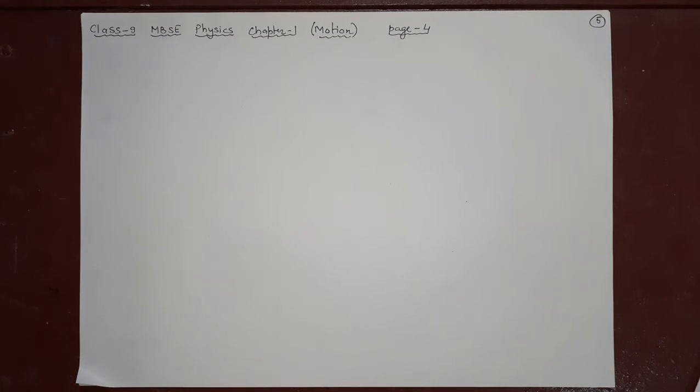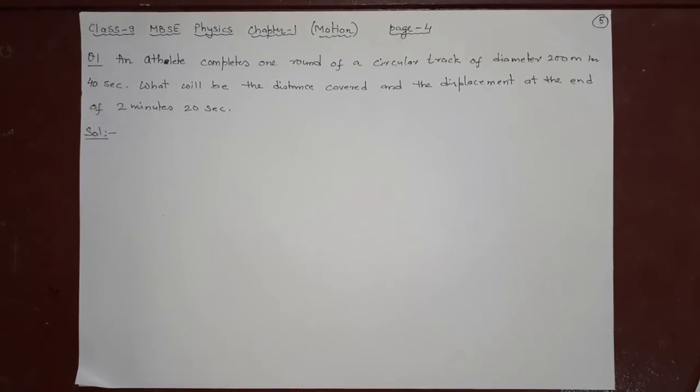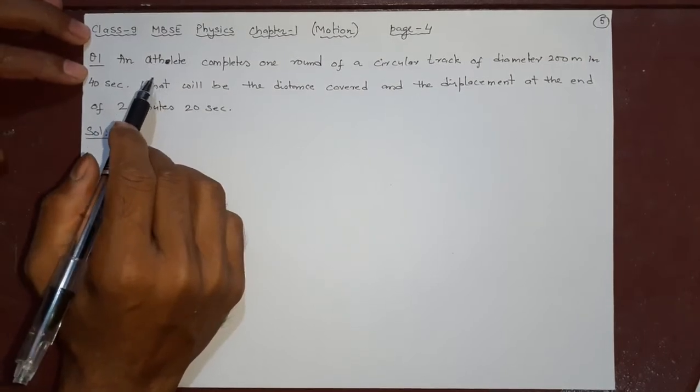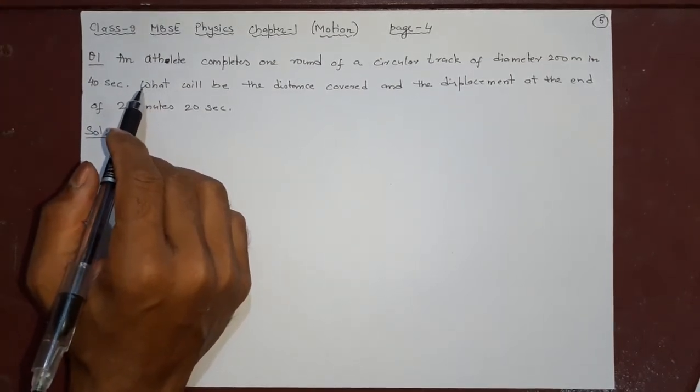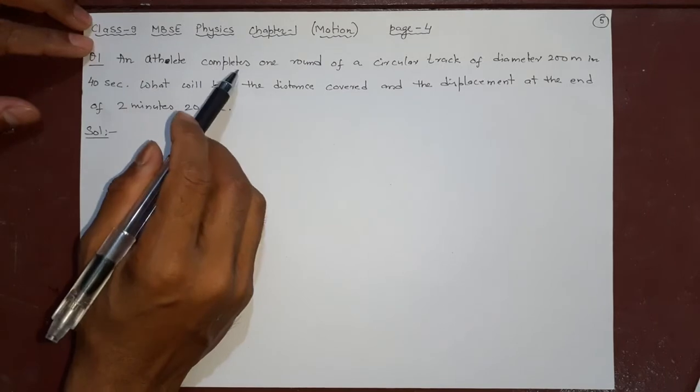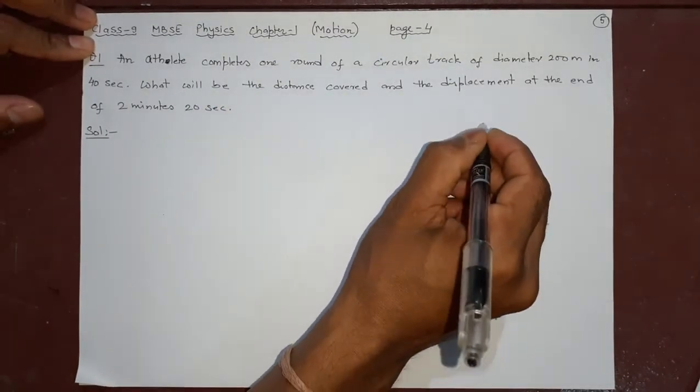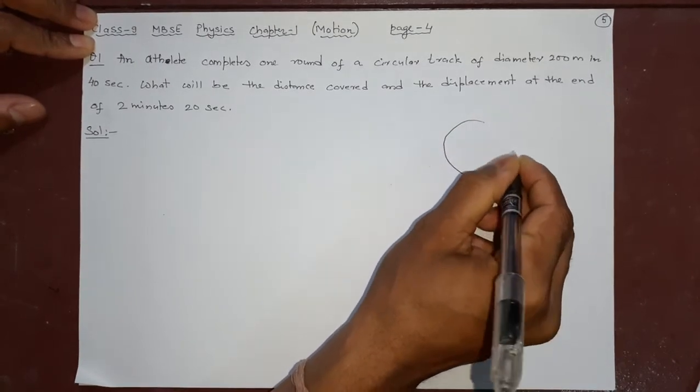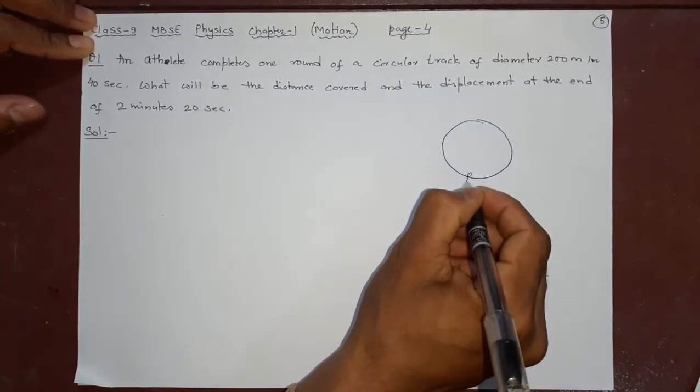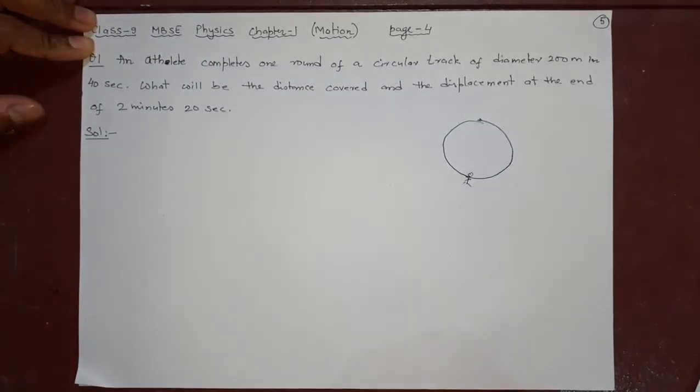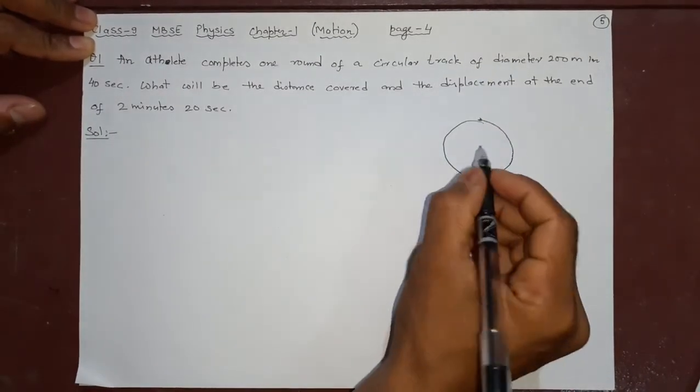Let's write the problem first. Page number will be four in your textbook. So let us see the question. An athlete, which means the one who runs or plays sports, completes one round of a circular track. That means the track where he is running is a circular one like this. He is running here and like this.